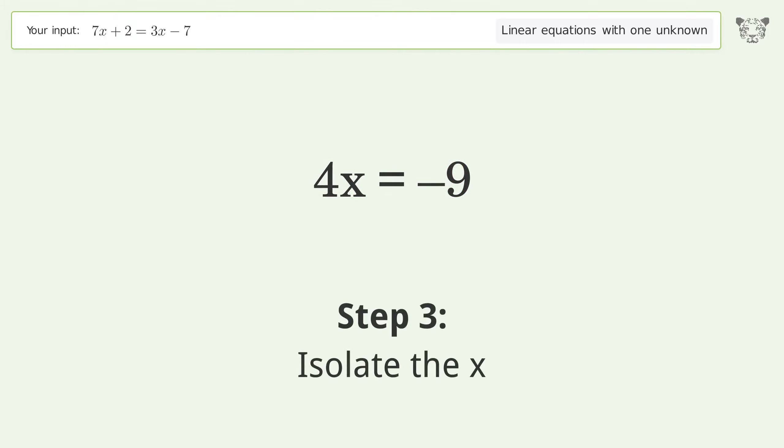Group like terms. Isolate the x. Divide both sides by 4. Simplify the fraction. And so the final result is x equals negative 9 over 4.